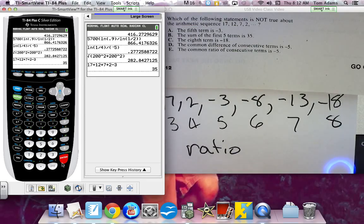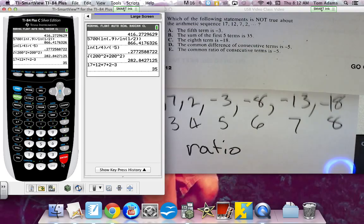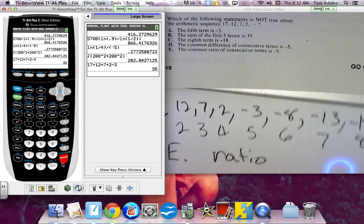Common ratio means that we're multiplying it by a number to get the next term. Is there a number that I'm multiplying 17 by to get 12? No.